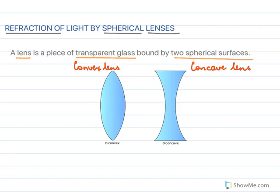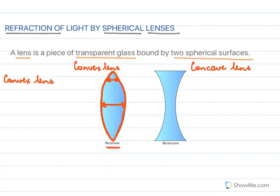Now, why is it called the convex lens? Because these two surfaces are convex surfaces — two bulging surfaces — hence the name bi-convex lens. You can also notice that the lens is thick in the center and thinner at the edges. So the convex lens is thick at the center but thinner at the edges.